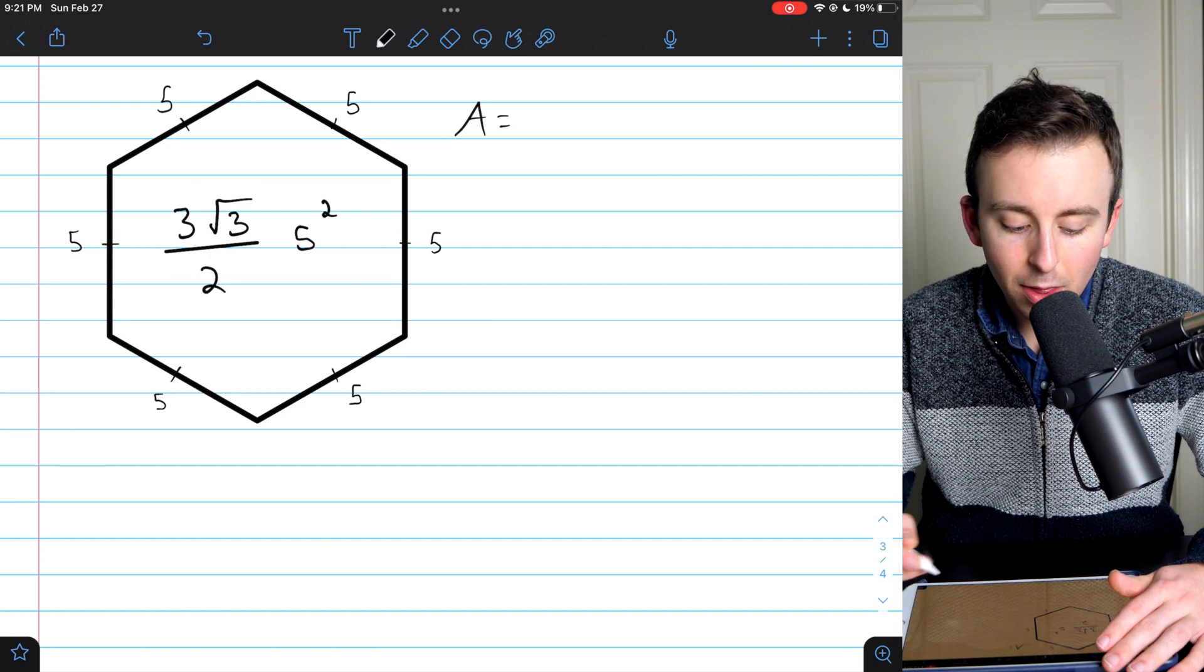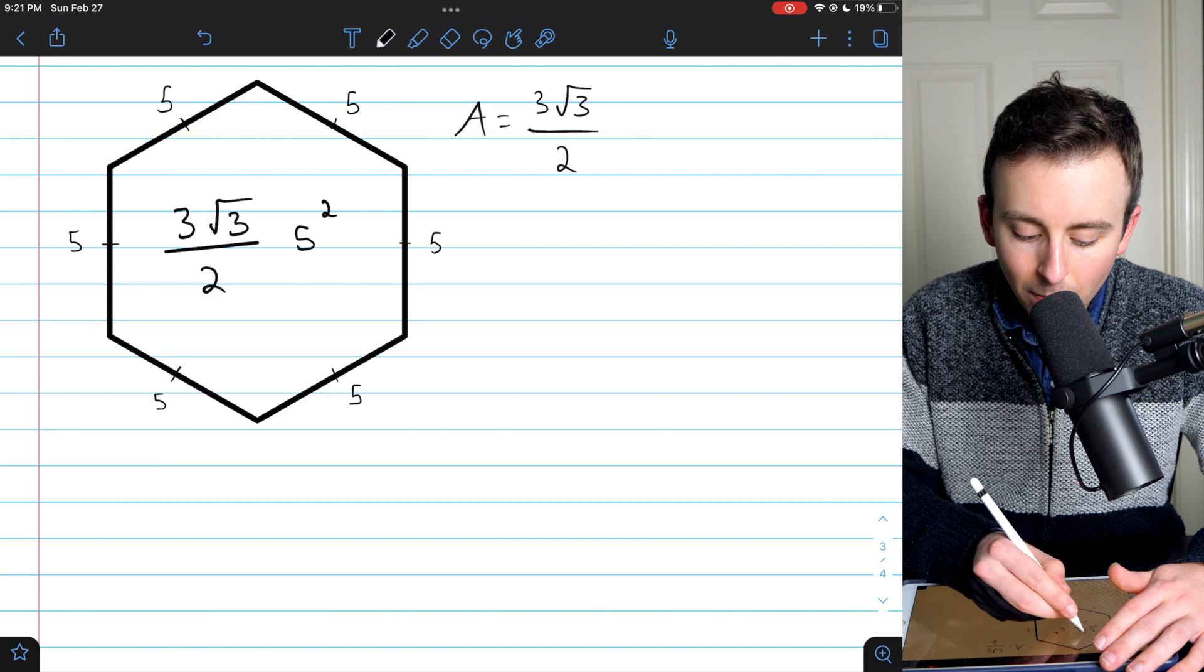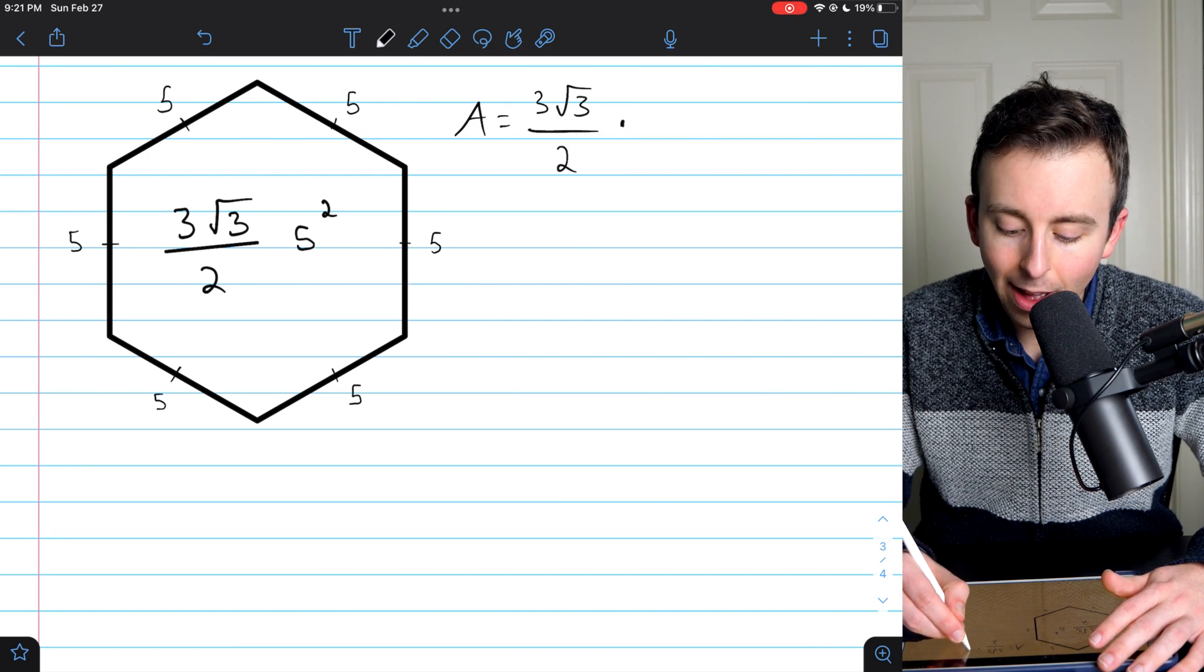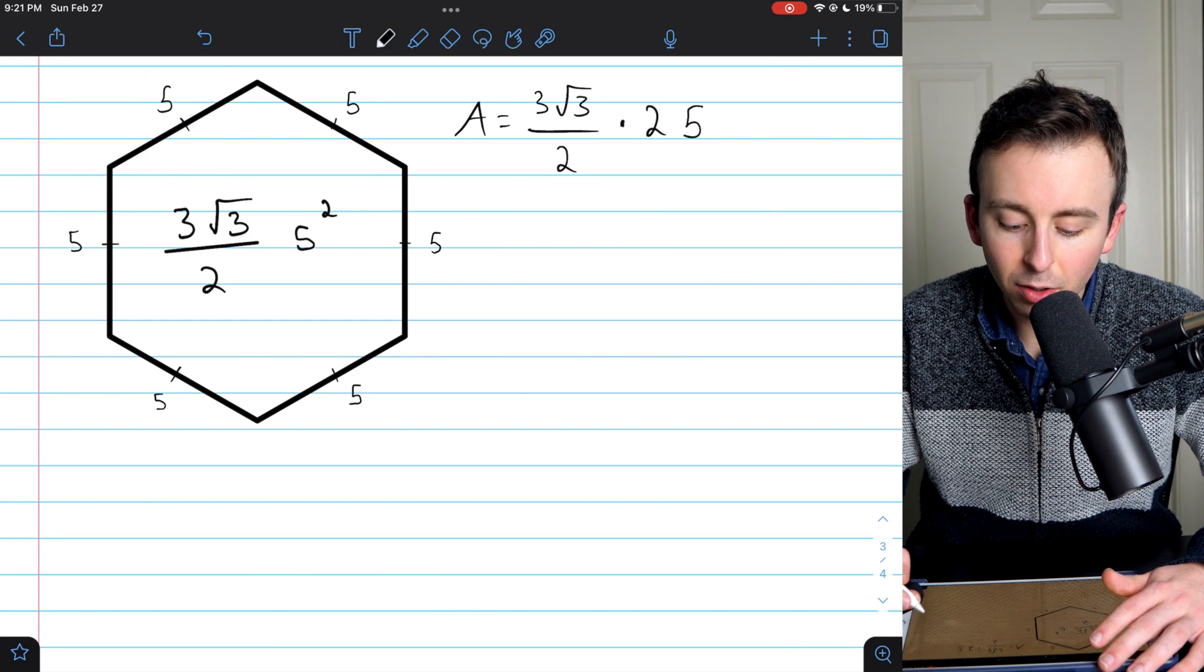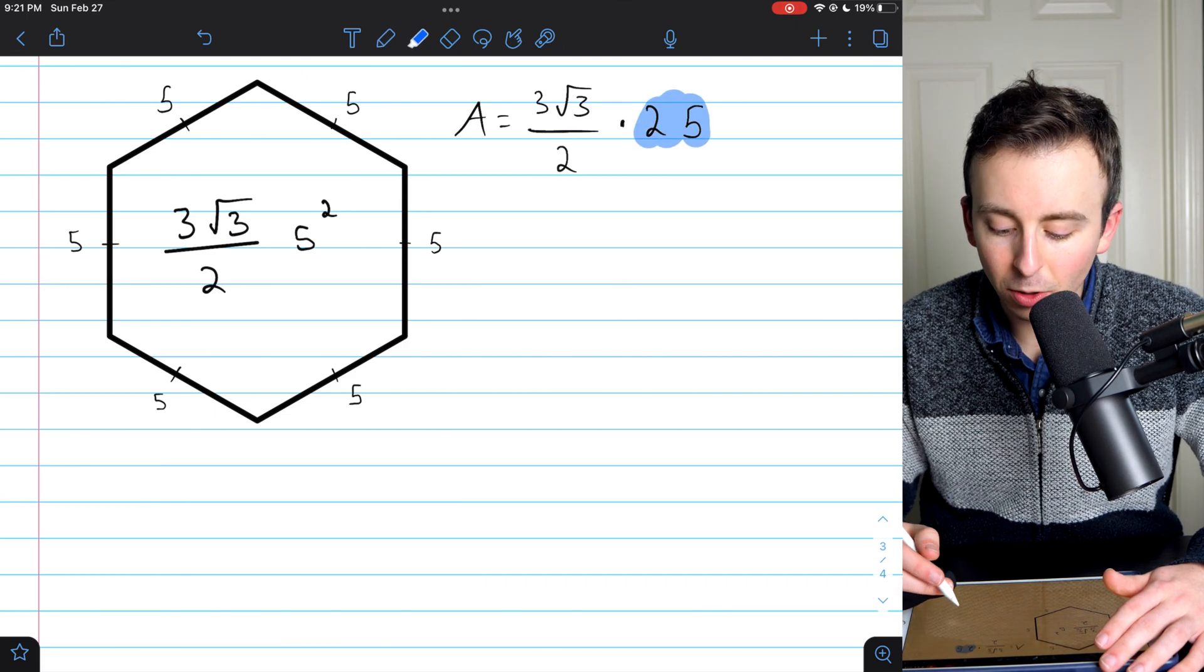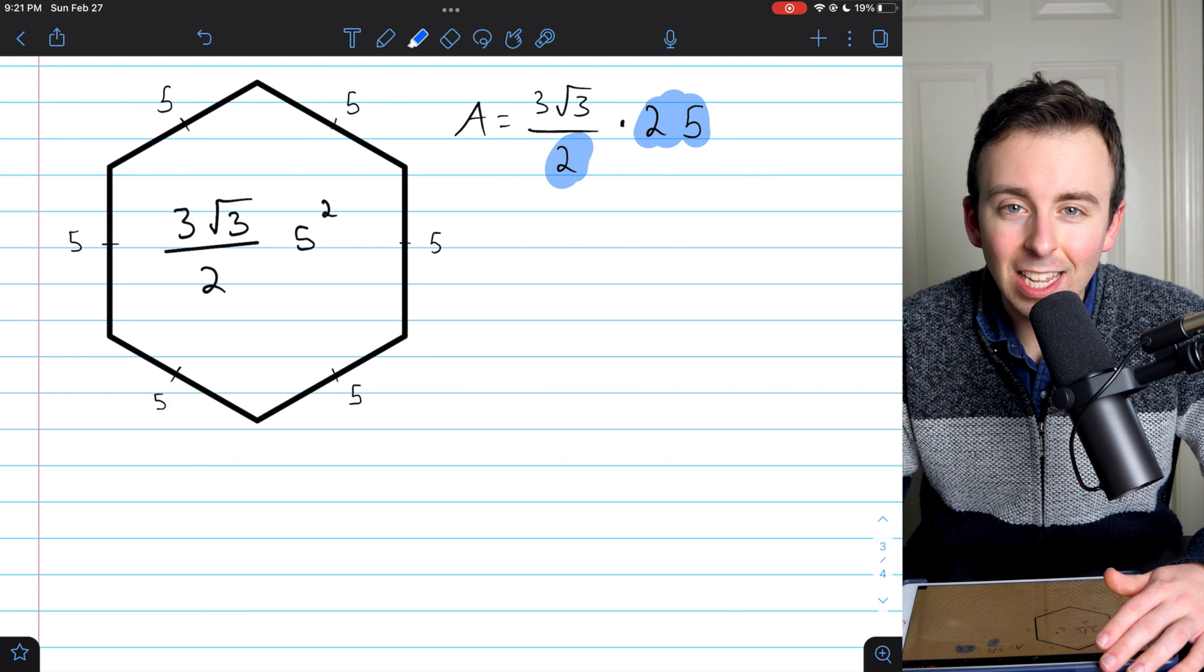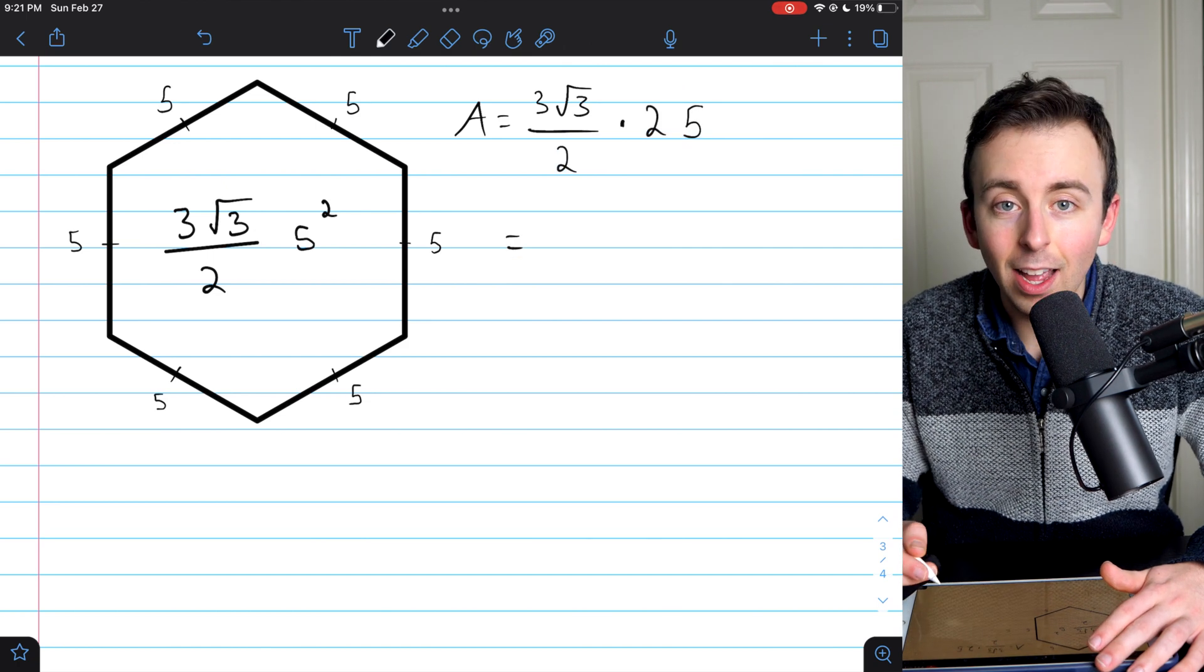What's the area of the regular hexagon? It's 3 root 3 over 2, times the side length squared. In this case, the side lengths are 5, so we need to multiply by 5 squared. You may know that 5 squared is just 25. Now 25 isn't even, so we're not going to be able to divide it by 2 nicely like we did before. We could if we want and just use a decimal, but personally, I like to keep things in nice, cute looking fractions.